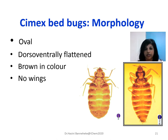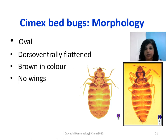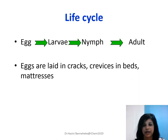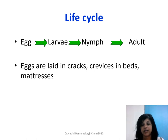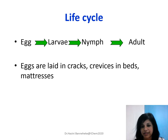If you look at the morphology, the Cimex bed bug is oval in shape and dorsoventrally flat — as if it has been crushed on that surface. It is brown in color and has no wings. In the life cycle, eggs hatch and release nymphs, these nymphs go through nymphal stages, and the nymphal stages become adults. These eggs are laid in cracks and crevices on beds, mattresses, or even chairs with small spaces.